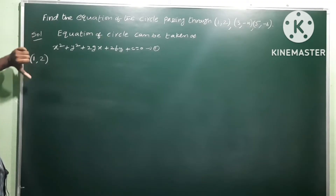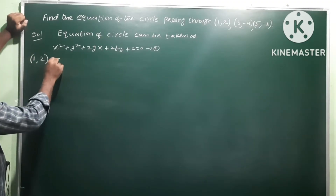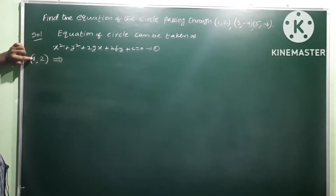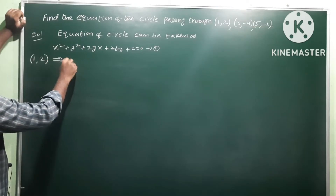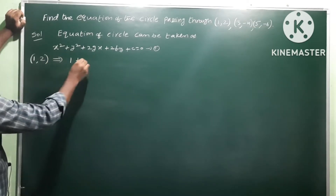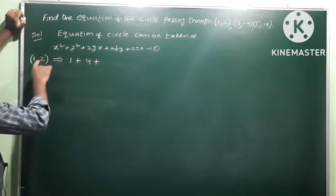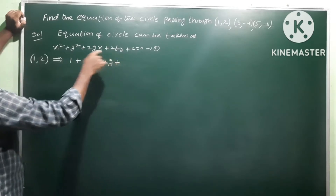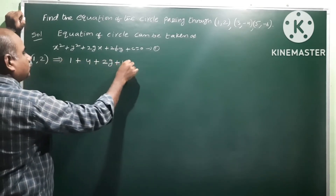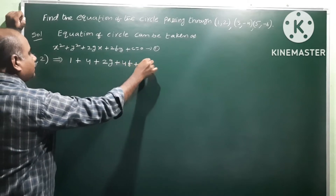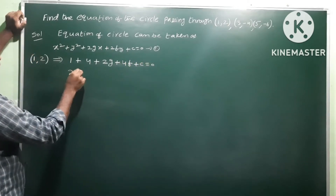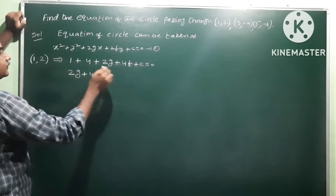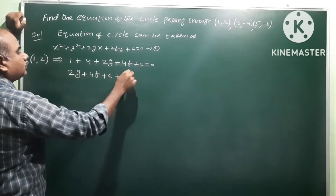First point: substitute (1,2). So x=1, y=2. x² = 1² = 1, y² = 2² = 4, 2g·x = 2g·1 = 2g, 2f·y = 2f·2 = 4f. Plus c equals 0. So 2g + 4f + c + 5 = 0. This is equation number 2.